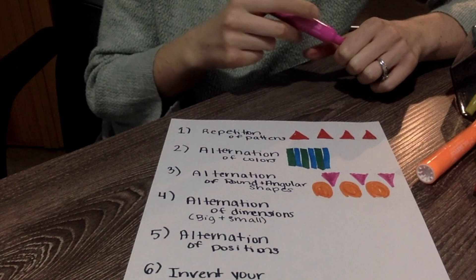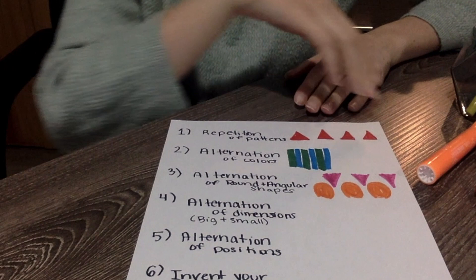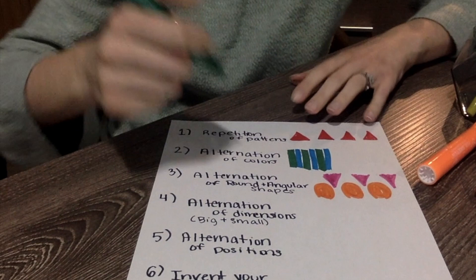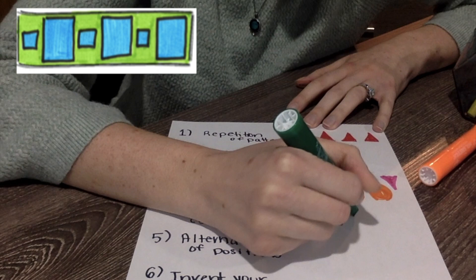Now this one asks for an alternation of the dimension meaning big and small. So for mine I am going to use my green again and I'm going to make this one my bigger square and then I'm going to do a tiny square and then a bigger square and then a tiny square just like so.